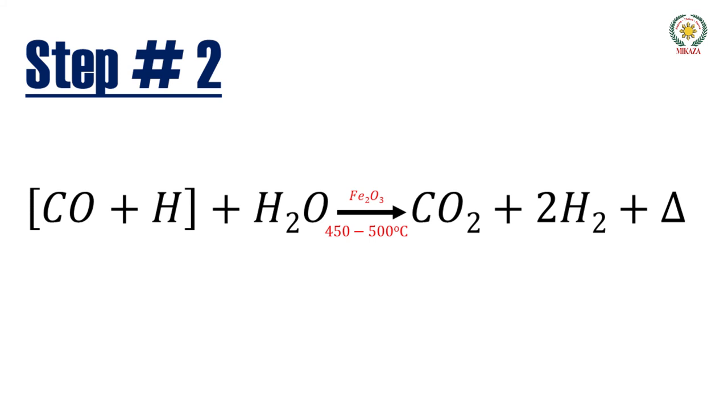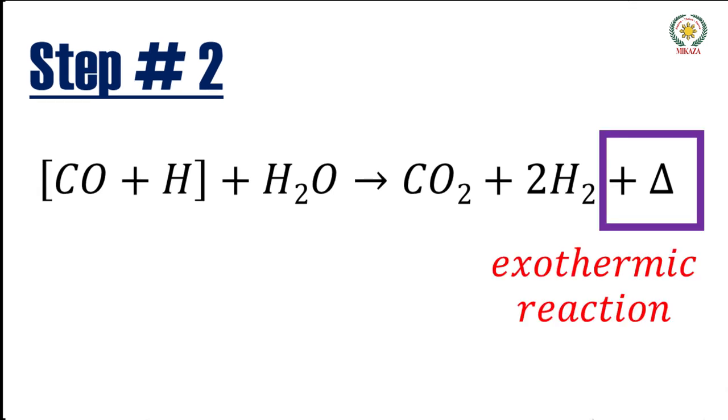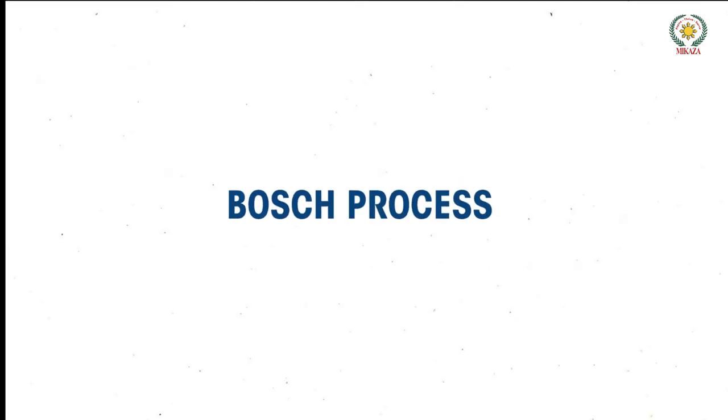Now in this reaction a lot of heat is evolved. So we write plus delta. Delta is indicating heat. Here heat was absorbed, here heat is evolved. So this is exothermic. So this is the Bosch process.